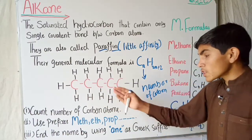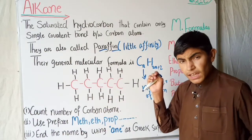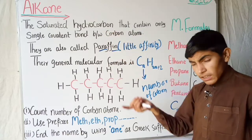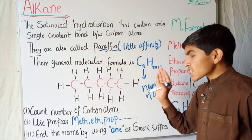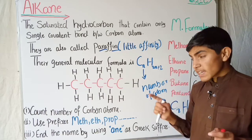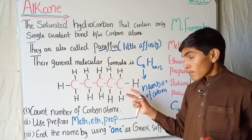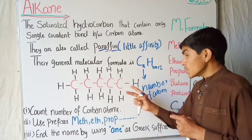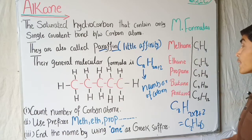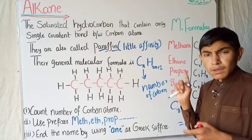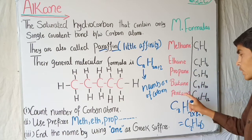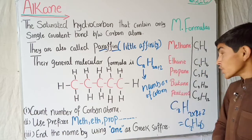If we talk about naming alkanes, these three rules are only for the straight chain. We will talk about other naming structures of alkane in our next lecture. So in a straight chain, the first rule is to count the number of carbon atoms. You can see that CH4 has only one carbon — 'meth' means one, 'eth' means two, 'prop' means three, 'but' means four, and 'pent' means five.